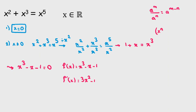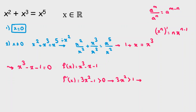When differentiating, we use the rule nx to the n minus 1. Differentiating the constant negative 1 gives 0, and differentiating negative x gives negative 1. Now, f prime is positive — meaning f is increasing — when 3x squared minus 1 is greater than 0, which is equivalent to x squared greater than 1 over 3, giving x greater than 1 over root 3, or x less than negative 1 over root 3.